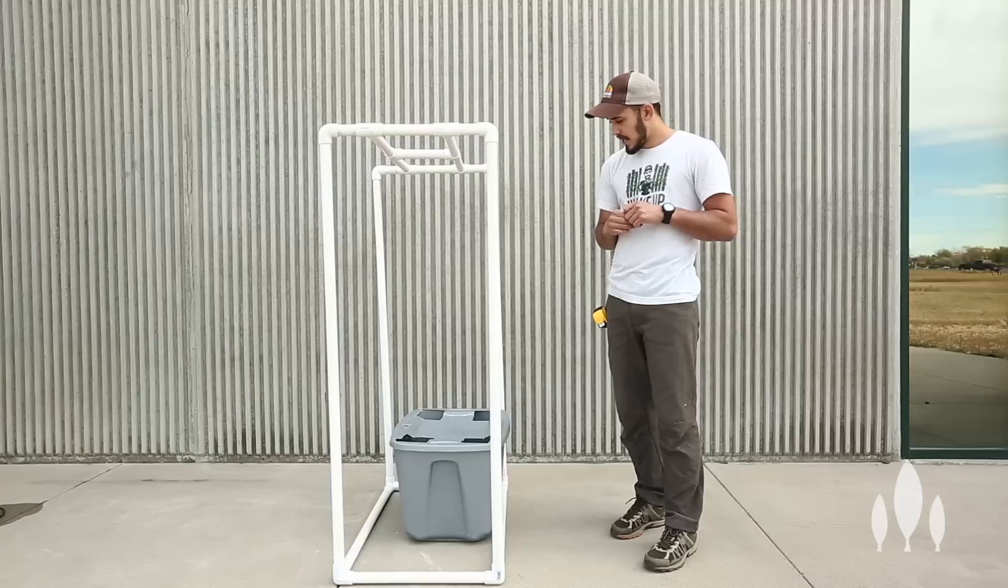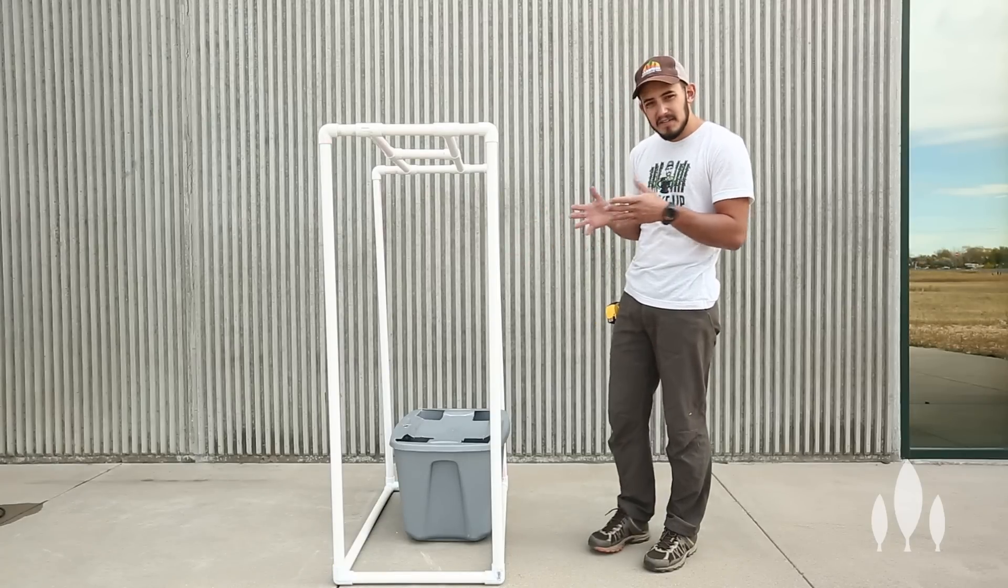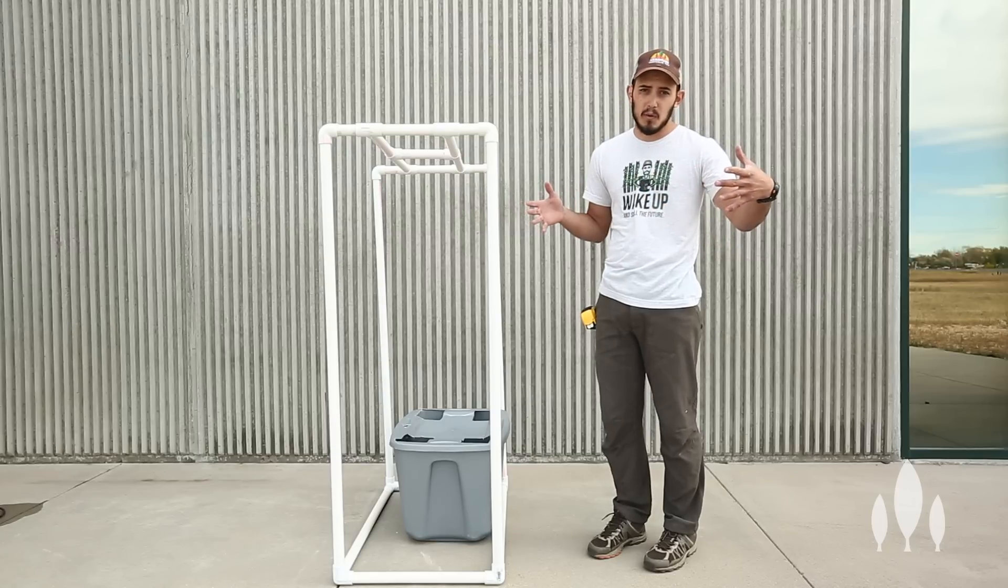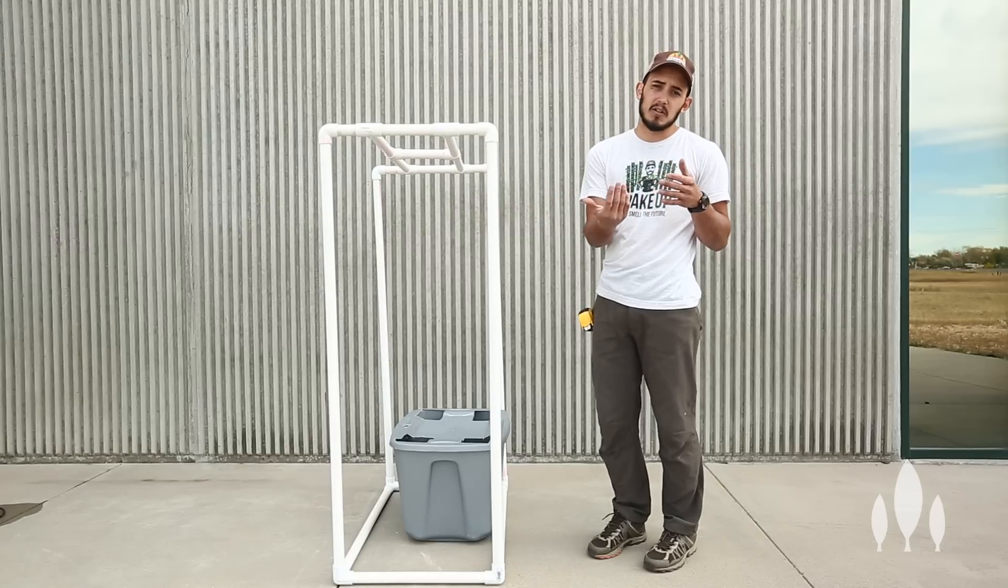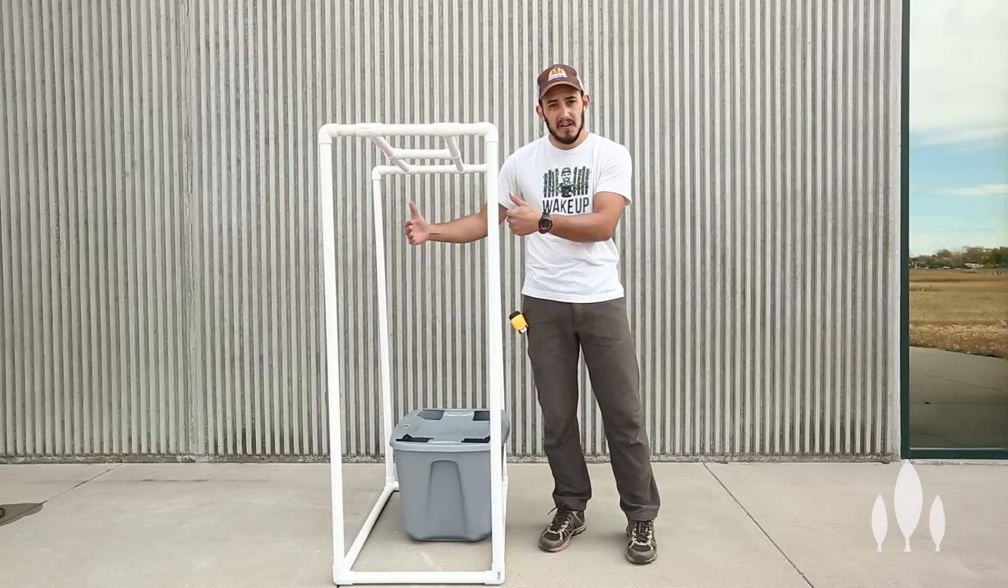When we hang our towers above our sump, we want 15 to 20 inches from front to back of our towers so our crops can grow out and forward, and also so our lights are close enough to our towers. Then we want to space our towers apart from each other about 5 to 8 inches roughly.